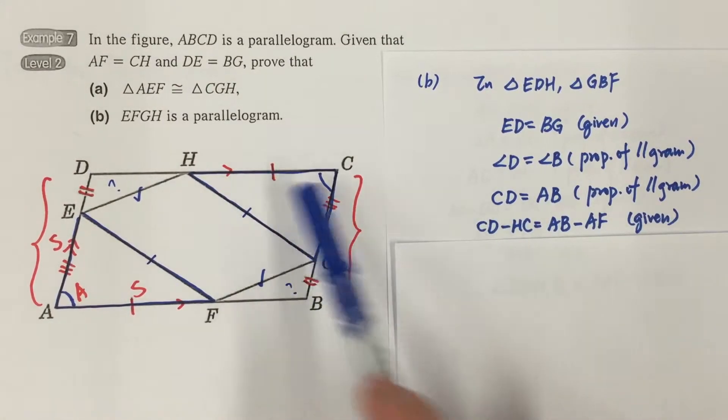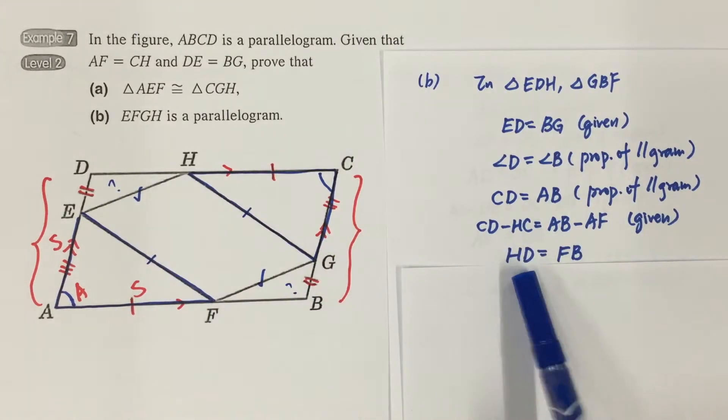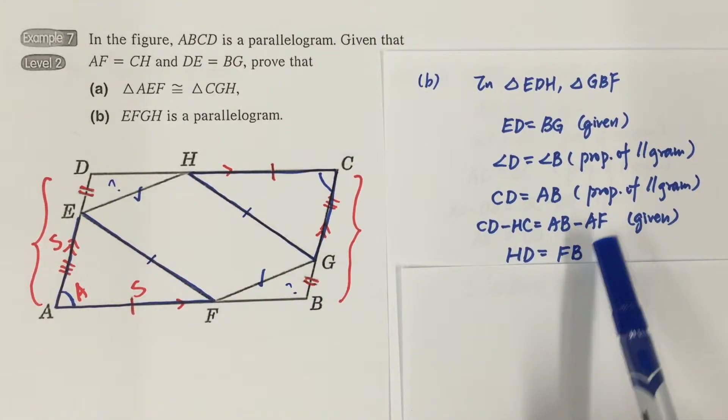And then we do the subtraction. Subtract this part by HC, you get DH. AB subtract AF, you get FB.